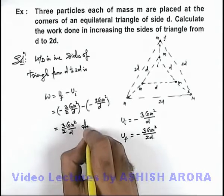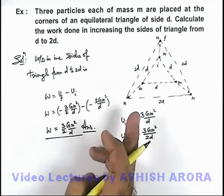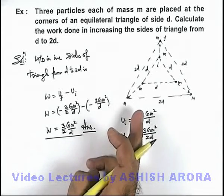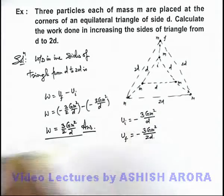That is the total work done and this is the answer of this problem, or it is the work required to increase the side of triangle from d to 2d at the vertices of which identical masses m are placed.